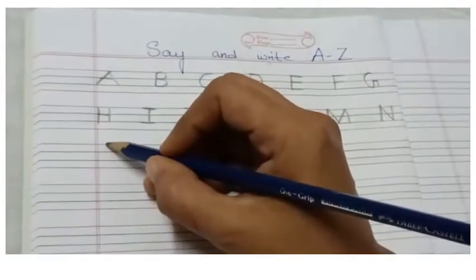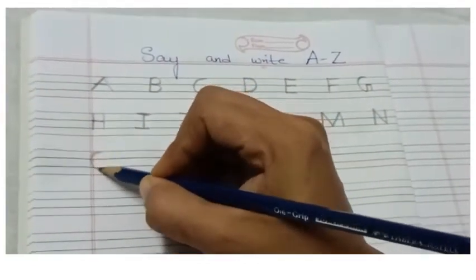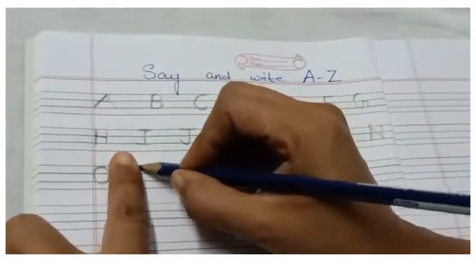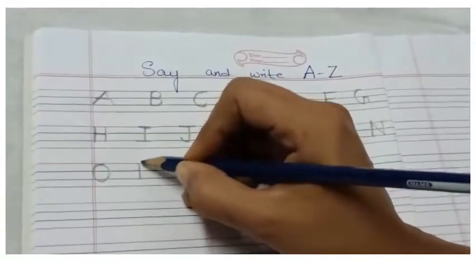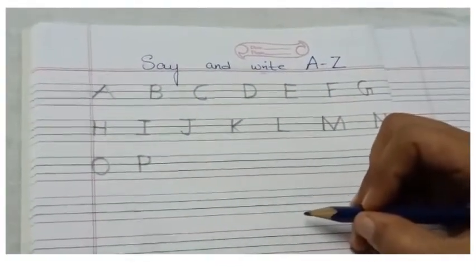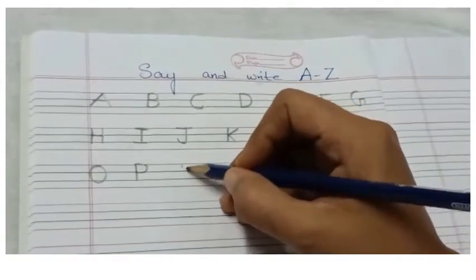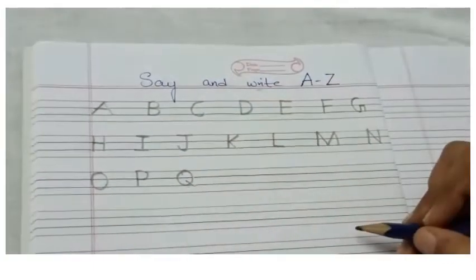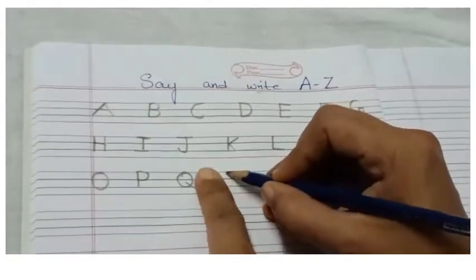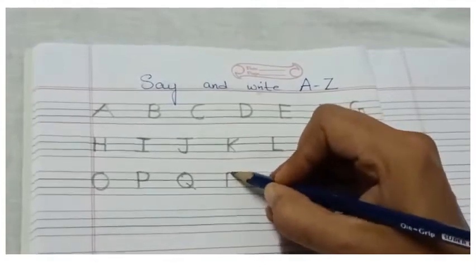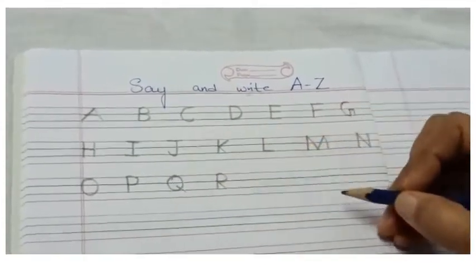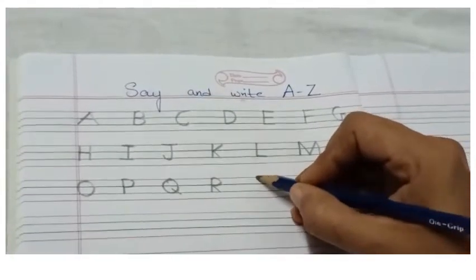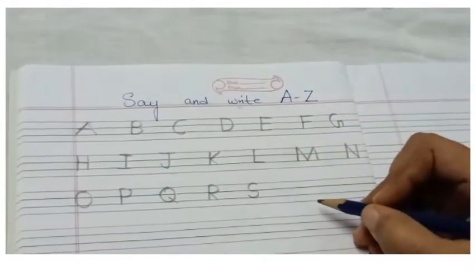After N, letter O. Letter O is very simple and easy — draw a circle, capital letter O. Give one finger space, we will be writing capital letter P — standing line, right curve, capital letter P. Give one finger space, we are going to write capital letter Q — draw a circle and a slanting line, capital letter Q. One finger space, now comes letter R — standing line, right curve and a slanting line, capital letter R. Now comes letter S — right curve, left curve, capital letter S.